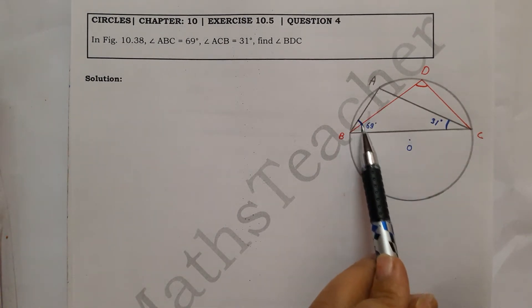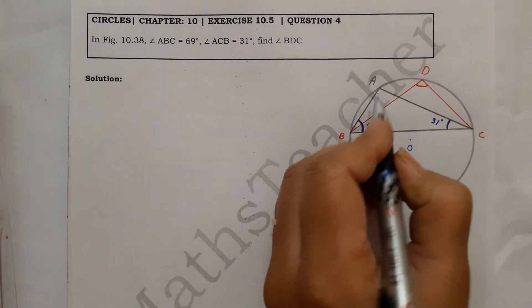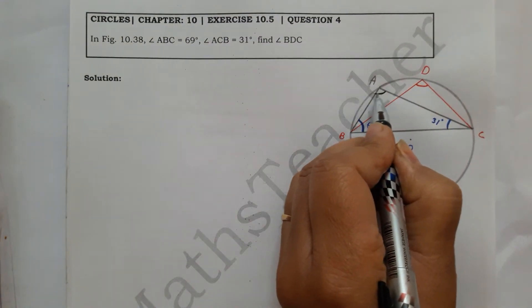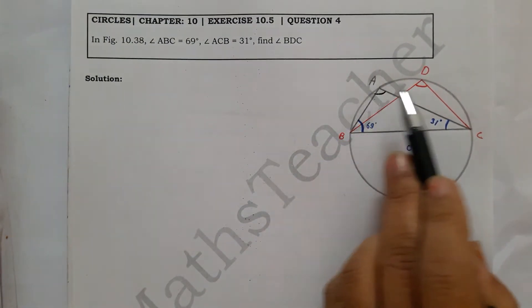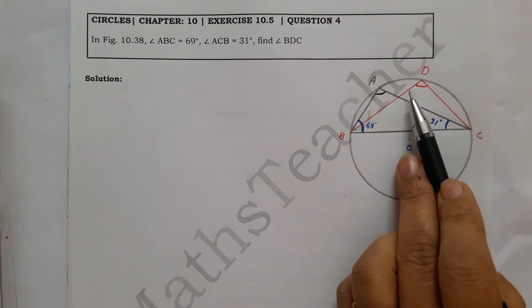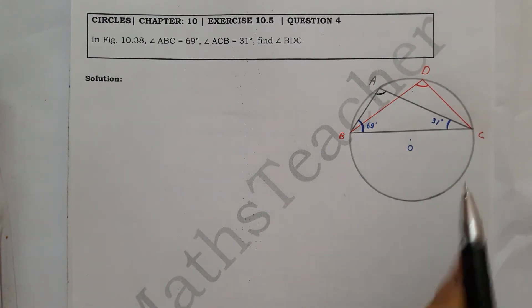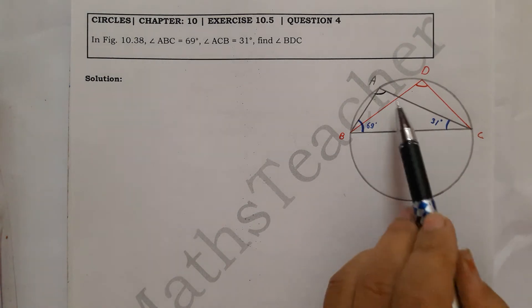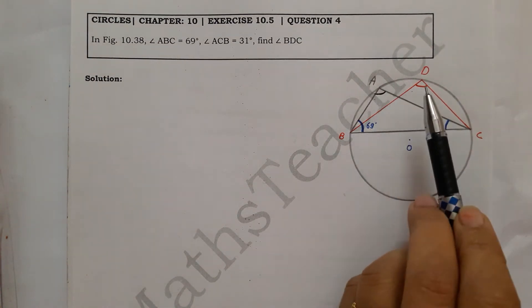In triangle ABC, you know this angle and you know this angle. You can easily find angle A from angle sum property. So when angle A comes, angle D will come because we have a theorem that angles in the same segment are equal.